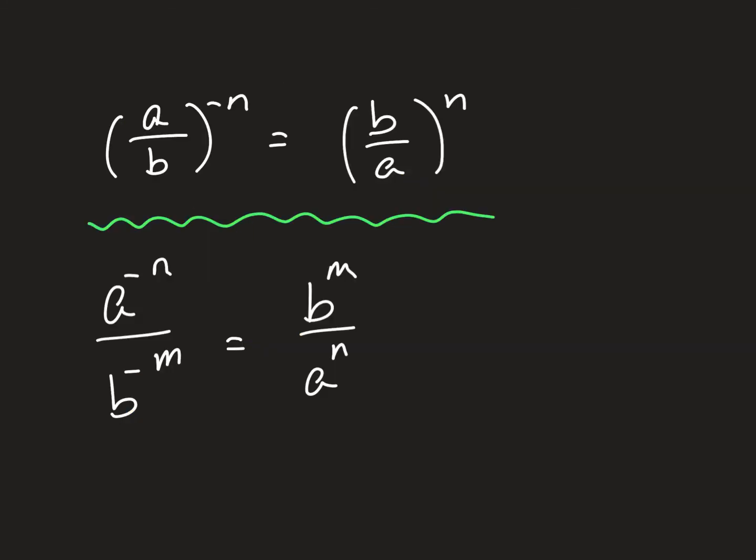Alright, almost done here. A negative exponent, we talked about this a minute ago. A negative exponent just flips things. So if you have a over b to the negative n power, you flip it. And the exponent becomes positive. If you have individual terms with negative exponents, you can just flip those. And they become positive. So I want you to think negative exponent, you just flip.